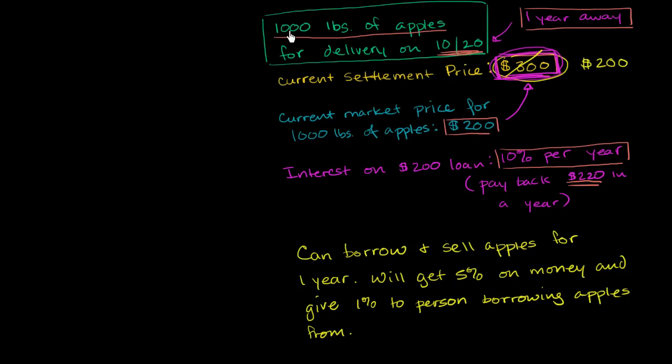Let's say that the settlement price for delivering 1,000 pounds of apples on October 20, which we're going to assume is one year from now, let's assume that it's $200. Let's also assume that the current market price for 1,000 pounds of apples is also $200. So that future settlement price is the same as the current market price.